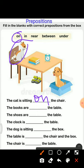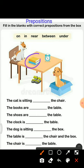Next one: the books are ___ the table. So the books — here are books — and the books are on the table. We will choose the correct preposition from the box and write here: the books are on the table.